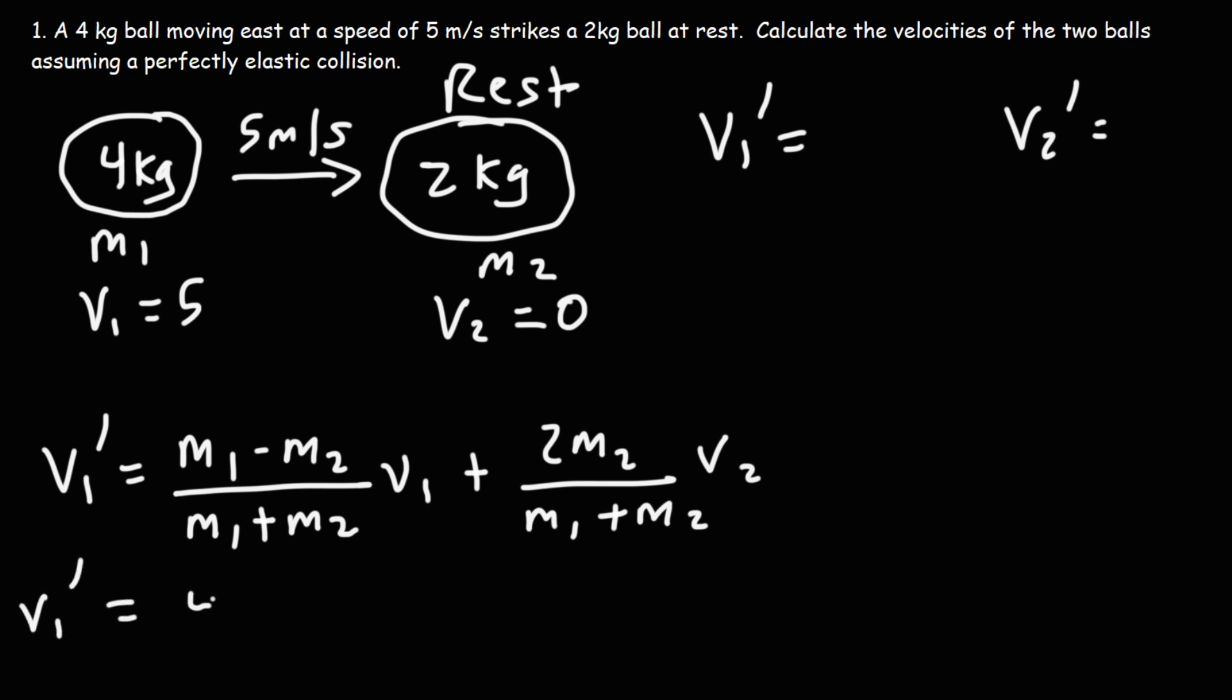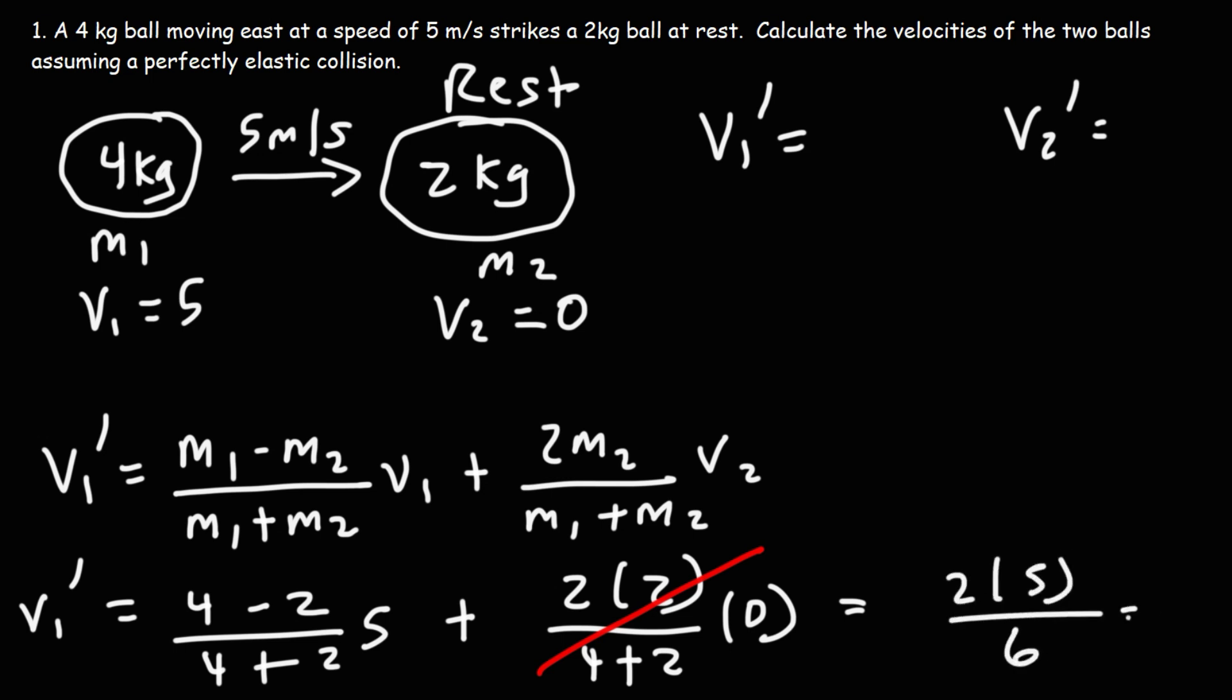So M1 is 4, M2 is 2, V1, we know that's 5, and then plus 2 times M2 divided by the sum of the two masses. Now the second ball is at rest, so V2 is 0, which means this entire term is 0. So here we're going to have 4 minus 2, which is 2, times 5 over 4 plus 2, which is 6. So it's 10 divided by 6, and that will give us a speed of 1.67 meters per second.